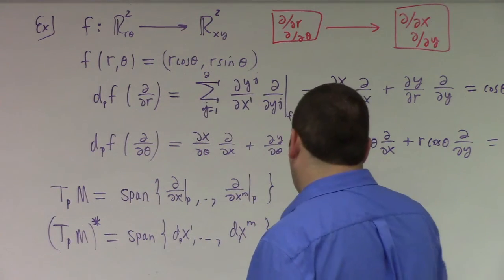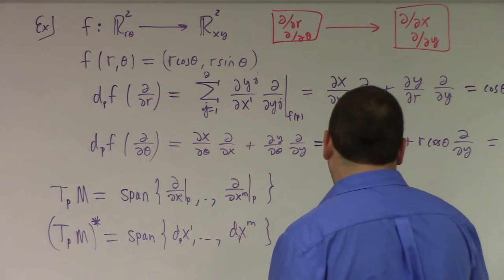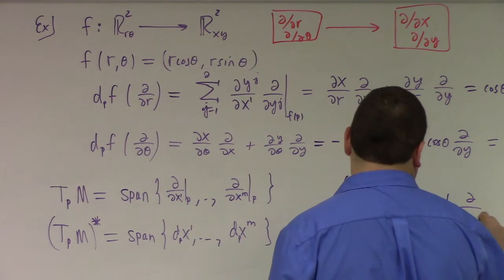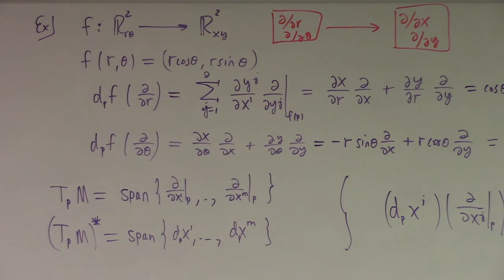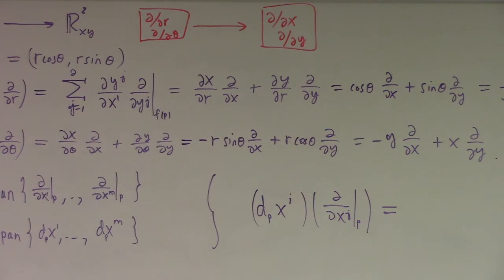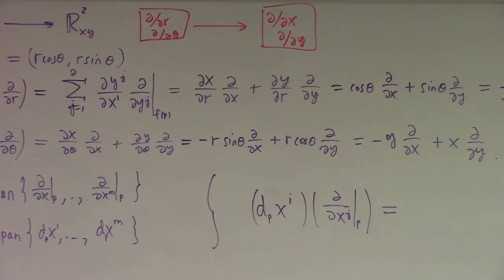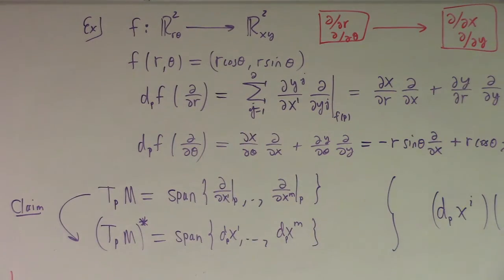I'm suggesting that dxi at P acting on partial partial xj at the point P should work out to the Kronecker delta ij. The definition of the dual space is the set of linear functionals on the tangent space — linear transformations from tangent vectors to real numbers. My claim is that you can write that as a span of the differentials. To see that the differentials are in fact a dual basis, we can either look at this as a push forward, or as the dual basis directly.